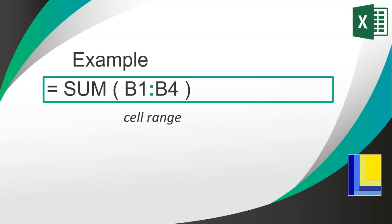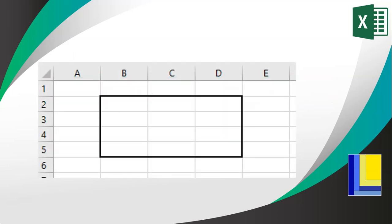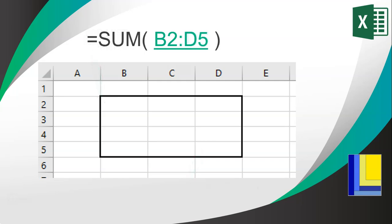The first value in a cell range is always the top-left corner, then you have a colon, and then the next value is always the bottom-right corner. For example, imagine numbers inside a black-bordered block and you want to add them all. The top-left corner is B2 and the bottom-right is D5. So you'd write B2:D5 as the cell range — that's what you put into your SUM formula to add all the values in that block.